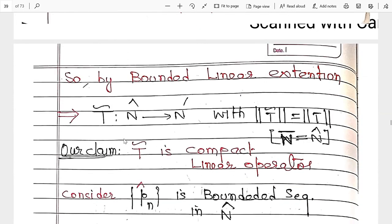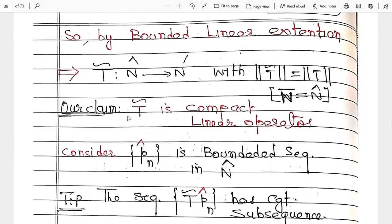Now this implies {p_n} is also a bounded sequence. If {p_n} is a bounded sequence, then we go to the given result: T from N to N-dash is a compact linear operator. And {p_n} is a bounded sequence in N. Then by the definition of compact linear operator, its image T(p_n) has a convergent subsequence. It has a convergent subsequence, say T(p_{n_k}), so T(p_{n_k}) is a convergent subsequence.